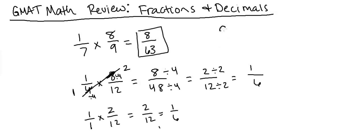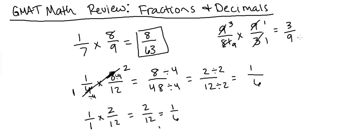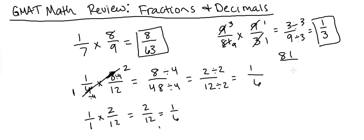Cross-canceling is recommended because it keeps numbers smaller. Without it, nine over 81 times nine over three would give 81 over 243, which is much harder to simplify. Sometimes you'll still need one more simplification step, but you'll never end up with nearly as large numbers as multiplying straight across.